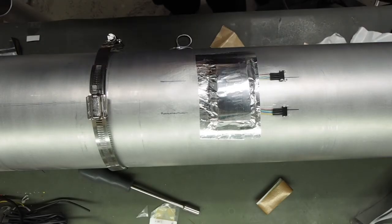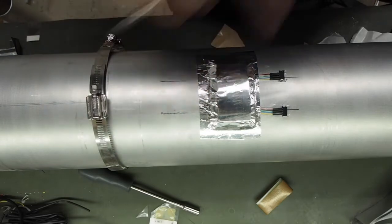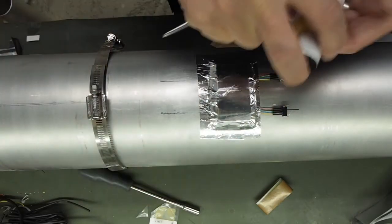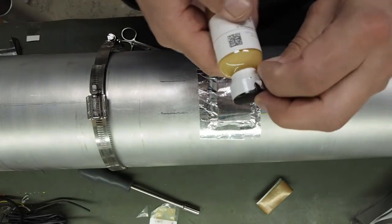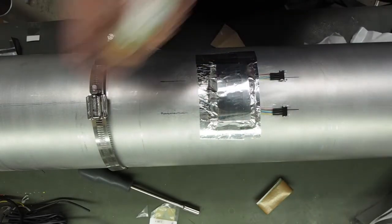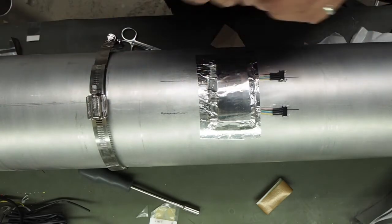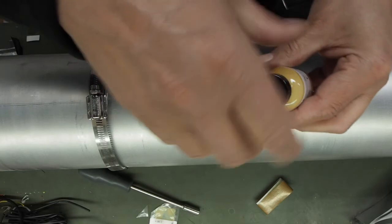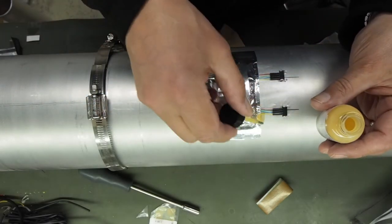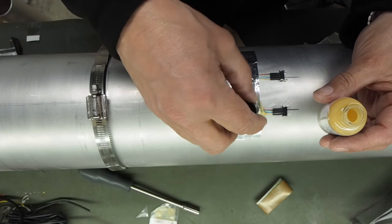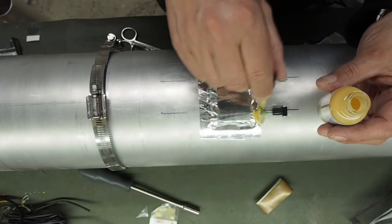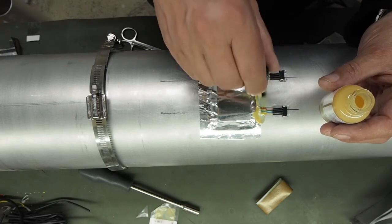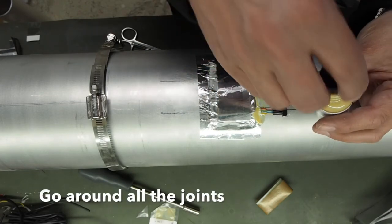Then next is with the M-coat B. Need to give it a good shake. Then we're going to work around the wires there. Going to go around all the outside and all the joins.